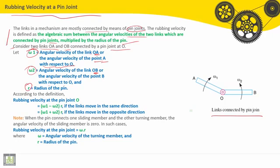And R is the radius of the pin. According to the definition, rubbing velocity at the pin joint O equals - there are two cases.